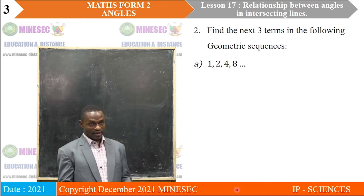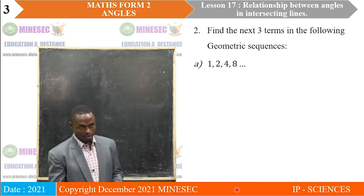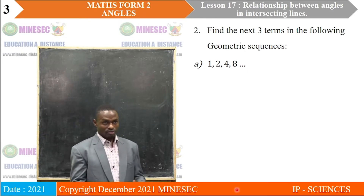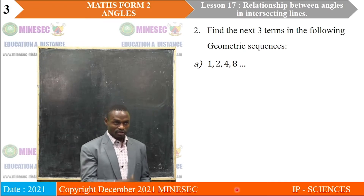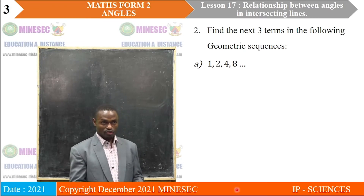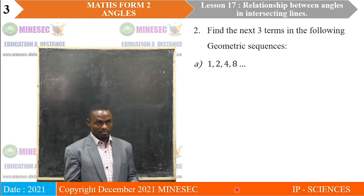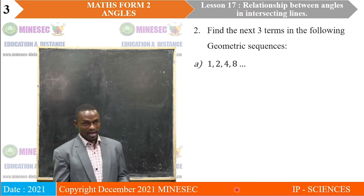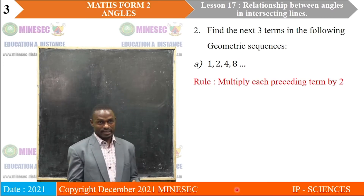Find the next three terms in the following geometric sequences. A: 1, 2, 4, 8. You should remember that for a geometric sequence, we should either be multiplying or dividing. Looking at 1 to 2, 2 to 4, 4 to 8, you notice there is a constant multiplication by 2. If you multiply 1 by 2 it gives 2; multiply 2 by 2 it gives 4; multiply 4 by 2 you obtain 8. So the rule is: multiply each preceding term by 2.